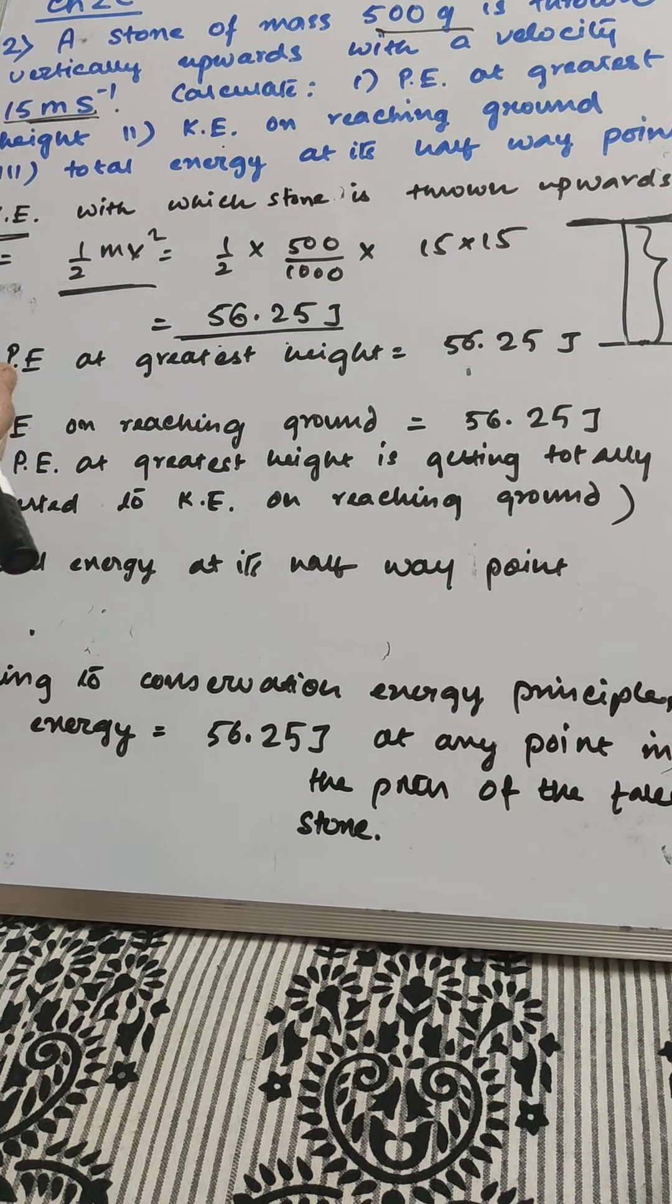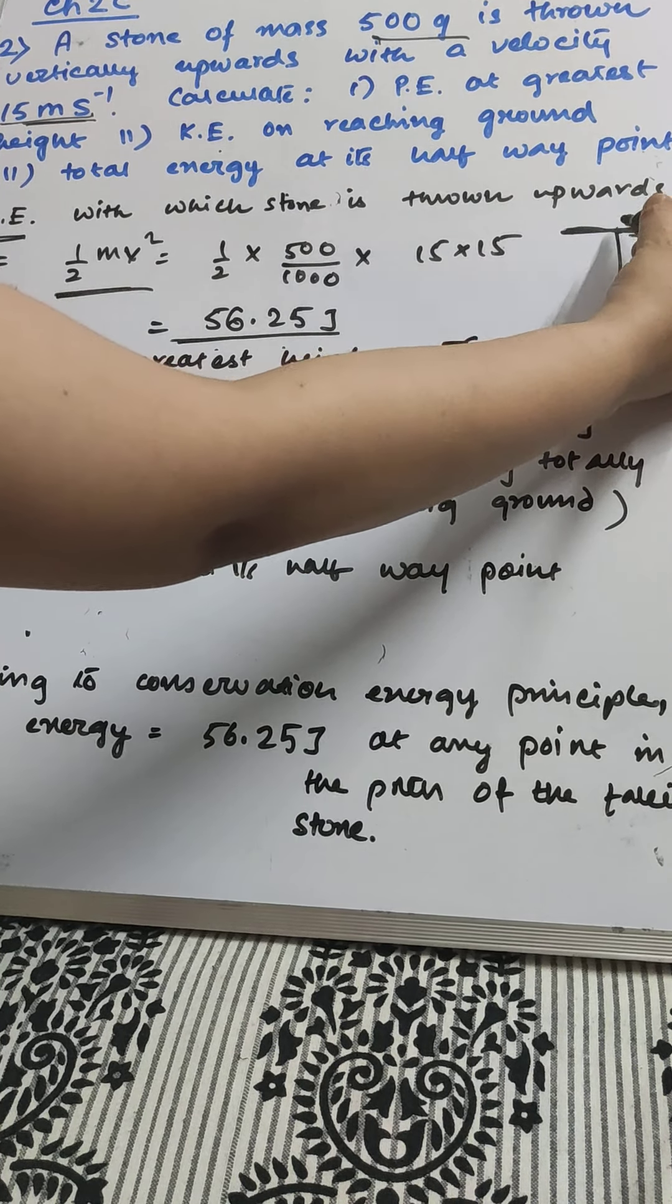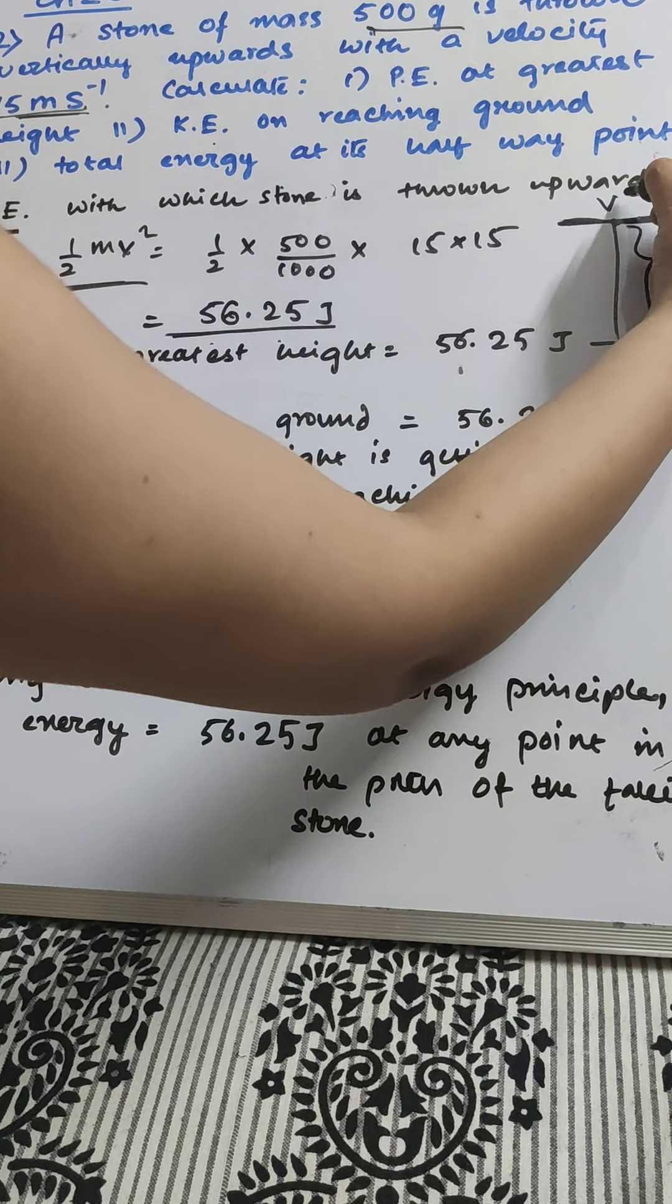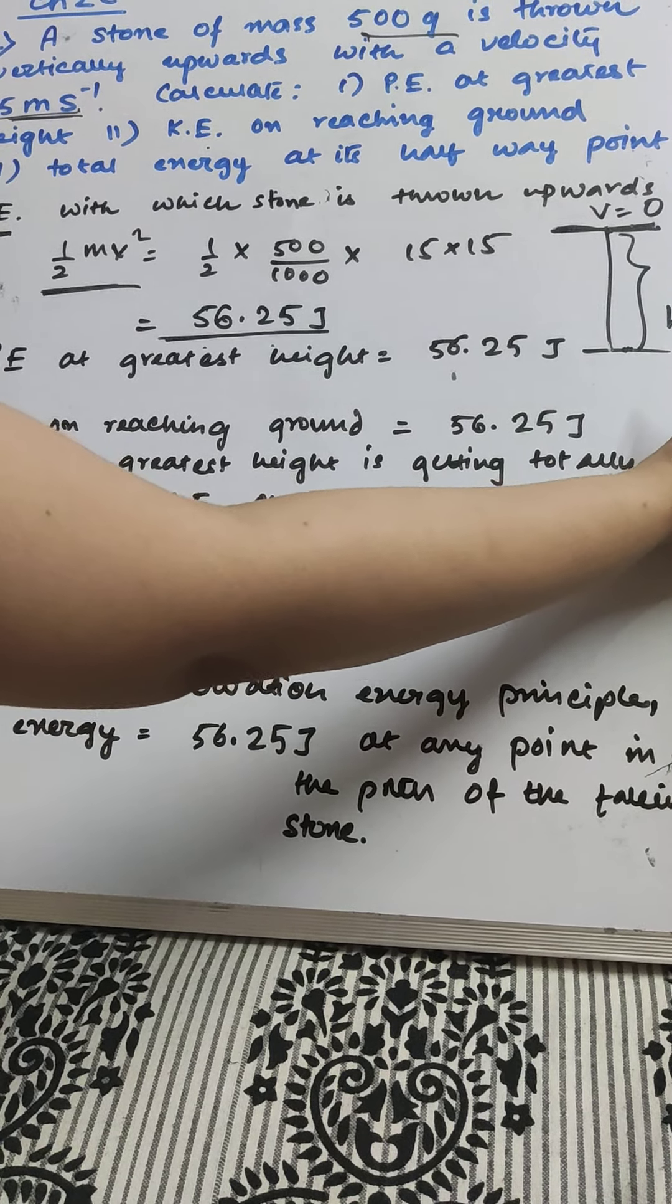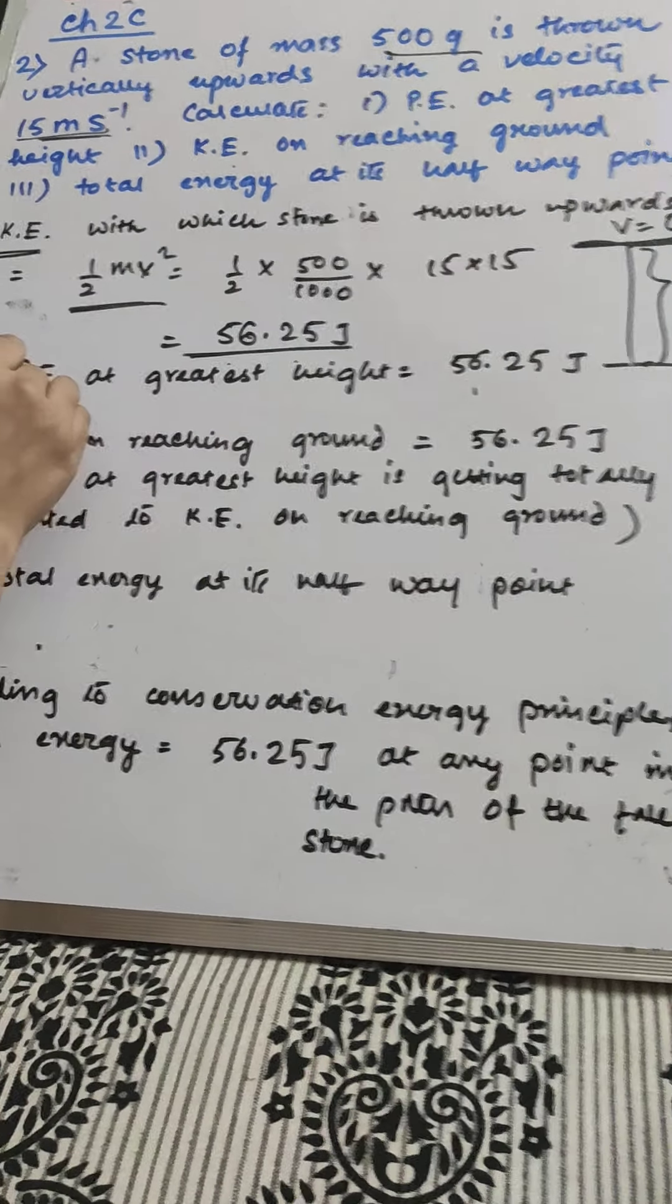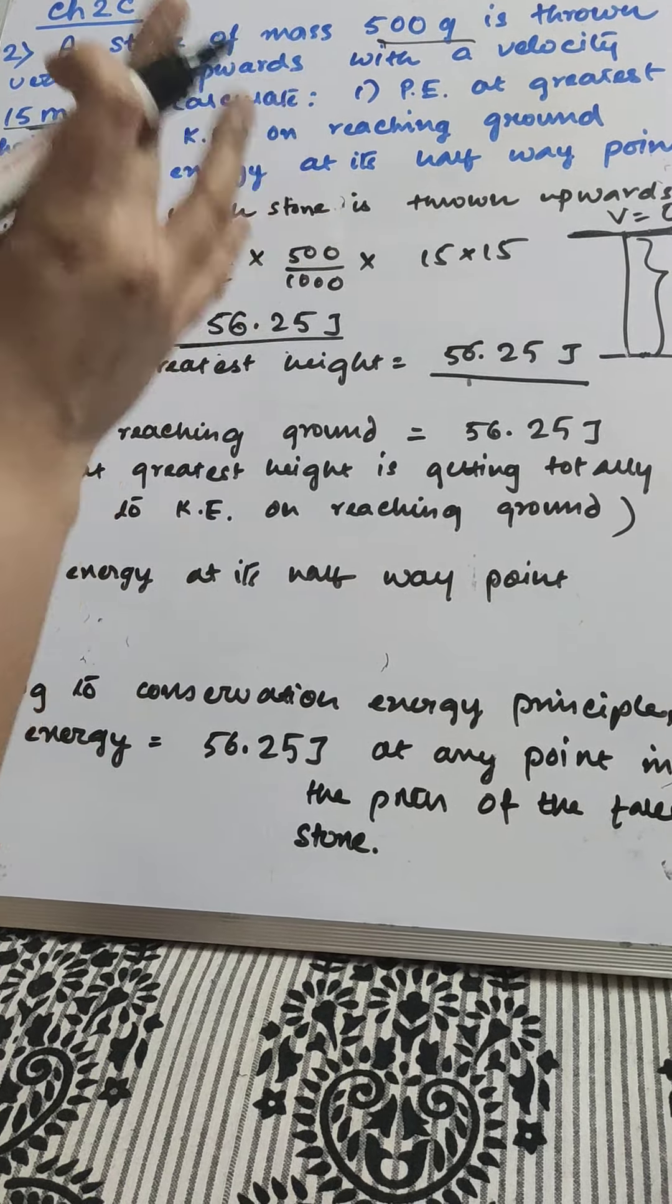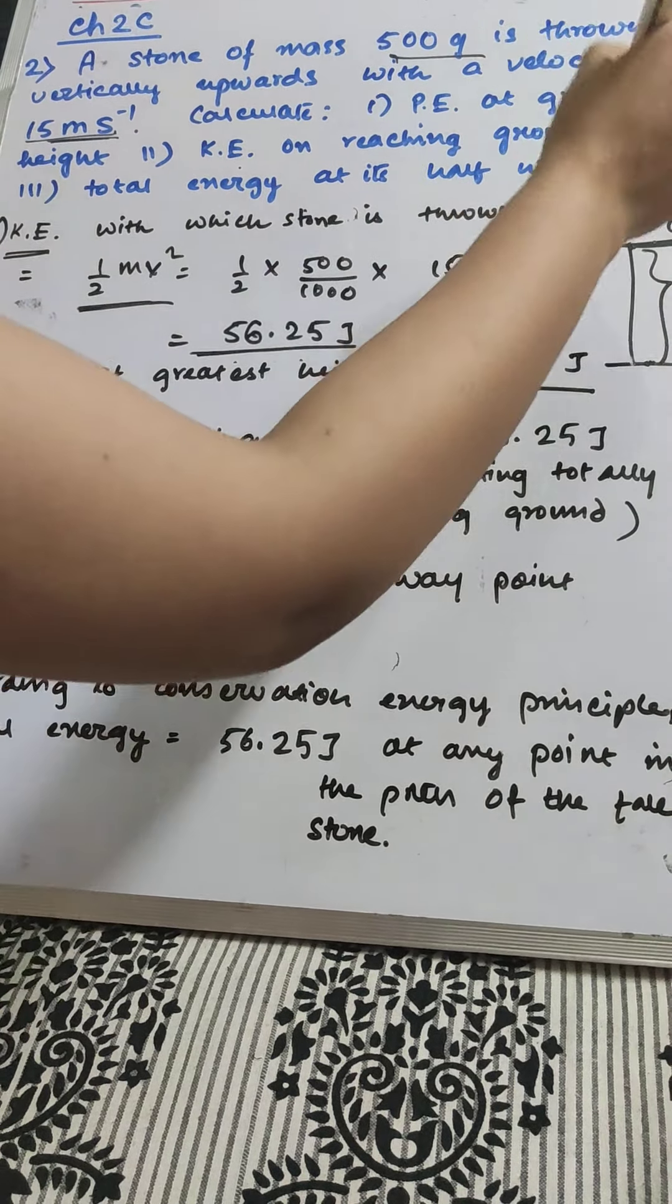How will I find the potential energy? When it will reach the maximum height, whole of the kinetic energy will get converted to potential energy because at maximum height, velocity will be 0. Kinetic energy will be 0 and potential energy will be 56.25 joule because energy is not destroyed. It will get converted to potential energy.